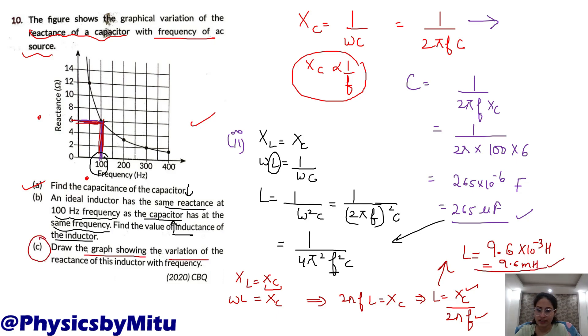Part C. Draw the graph showing the variation of reactance of this inductor with frequency. XL is omega L. XL is 2 pi fL. So, directly proportional XL and f directly proportional graph with a straight line. This is XL. This is f. You get a straight line.